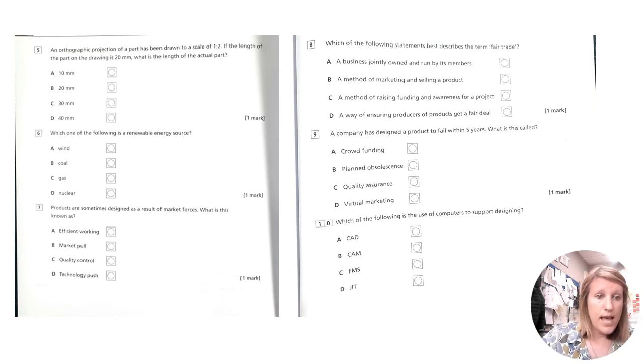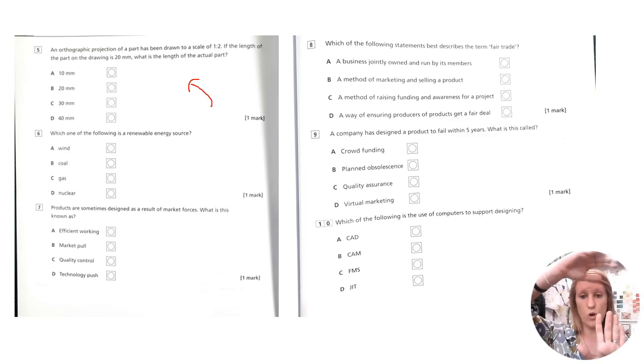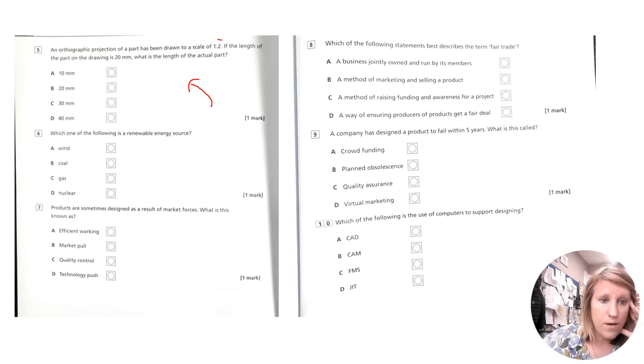This one is a scaling question which could catch you out, but it's not too tricky. But hopefully I'll explain it to you. So orthographic projection. So you all did orthographic drawings in your NEAs. It's where you see you see the front, the top plan or the side. And obviously, if you're drawing something like a building or a boat or something like that, you can't draw it to scale. So you have to use a scaling factor. So it might be half size or quarter size or something like that. So it's asking you basically half. It's got half size there. So if the length of the part on the drawing is 20, what is the length of the actual part? So if it's 20 on the drawing, that means it's half on the drawing. So the actual answer is 40 millimeters because it would be double the size in real life.